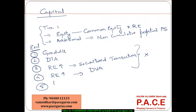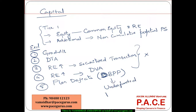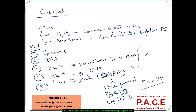Along with that, if there are any plan deficits — if the defined benefit pension plan is underfunded, meaning the plan assets are lesser than the plan liability obligation — then we are calling it underfunded. This underfunded status is also used to adjust the capital downwards. Whereas we don't adjust it upwards if my plan assets are greater than the obligations to be paid under the defined benefit pension plan.